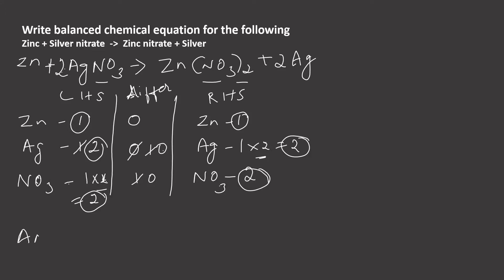Now we can write the answer: Zn + 2AgNO3 → Zn(NO3)2 + 2Ag.